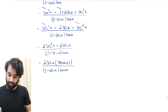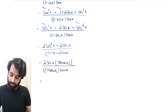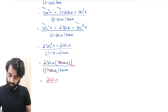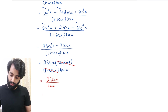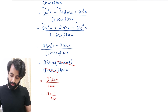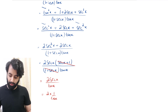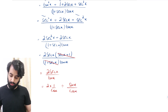Now (sec x + 1) in the numerator and (1 + sec x) in the denominator cancel out — exactly what we were hoping for. We're left with 2 sec x over tan x. The best approach now is to express everything in terms of sine and cosine, so I'll replace sec x with 1/cos x and tan x with sin x/cos x.